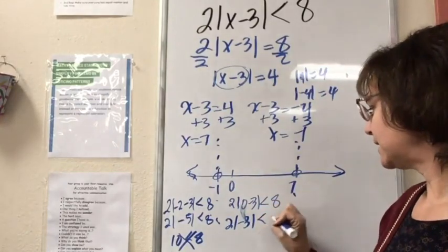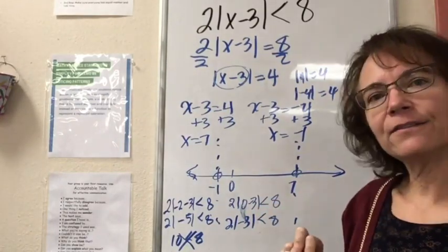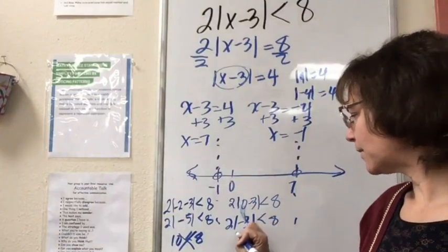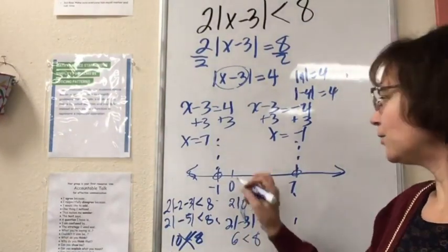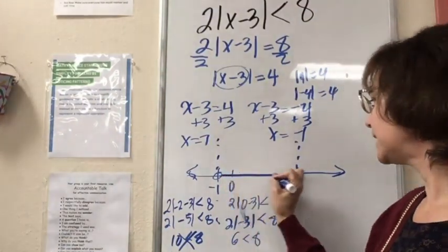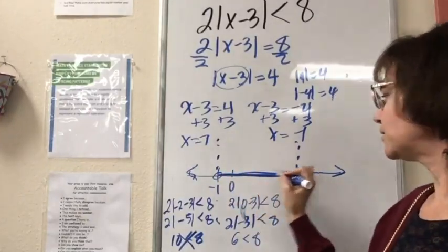So 2 times the absolute value of negative 3. The absolute value of negative 3 is 3, so I have 6 is less than 8. I know that's true. So I know inside here is going to be true.